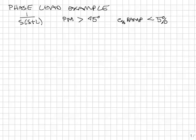Let's look at an example of using a phase lead controller. My plant is here, 1 over s times quantity s plus 2. My specifications are phase margin greater than 45 degrees.